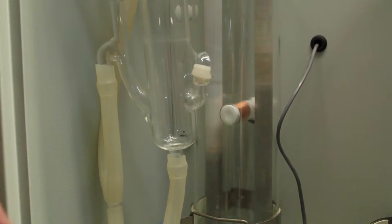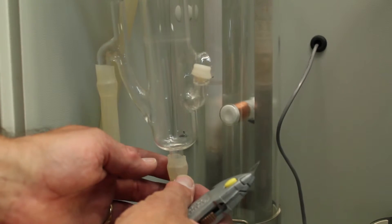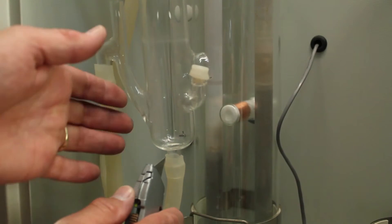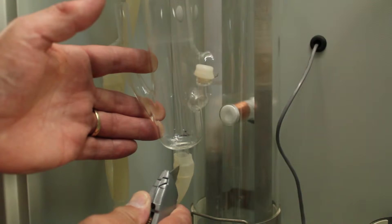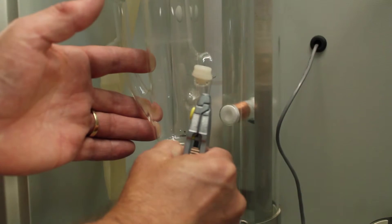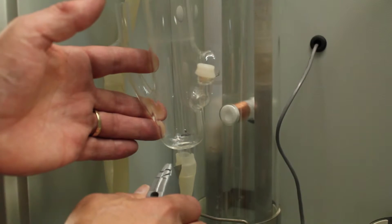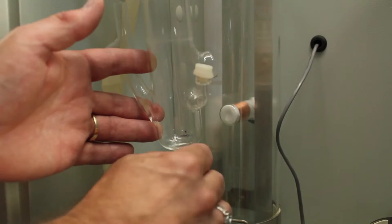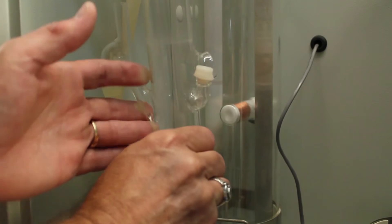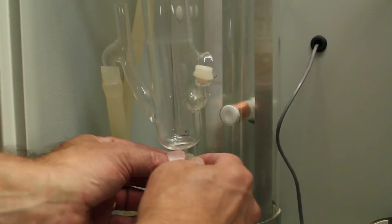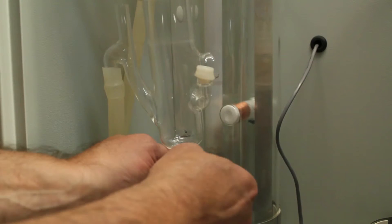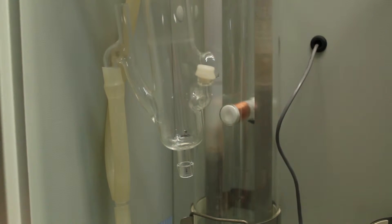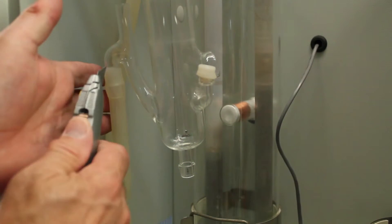Now to remove the drain tube, a lot of times this is going to be adhered to the glass so you're going to need to cut it lengthways. Cut the tube just to the bottom of the glass, then you can peel the tubing around. Remove it from the constant level device, same with this drain tube.